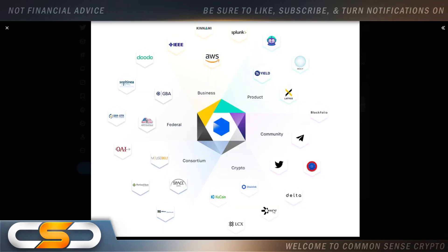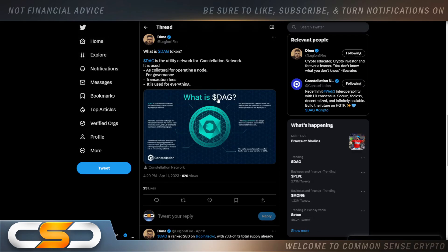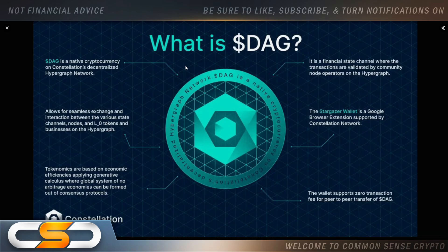If you hold LCX, you should be holding DAG — same thing as if you hold Quant. DAG token is utilized in kind of the same way the Quant token is utilized. DAG is a native cryptocurrency on Constellation's decentralized hypergraph network. It's a financial state channel where transactions are validated by community node operators on the hypergraph. The Stargazer wallet is a Google browser extension supported by Constellation Network. The wallet supports zero transaction fees for peer-to-peer transfers of DAG and allows for seamless exchange and interaction between the various state channels, nodes, and layer zero tokens and businesses on the hypergraph. Tokenomics are based on economic efficiencies applying generative calculus where a global system of no-arbitrage economies can be formed out of consensus protocols.